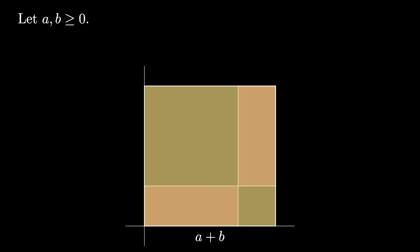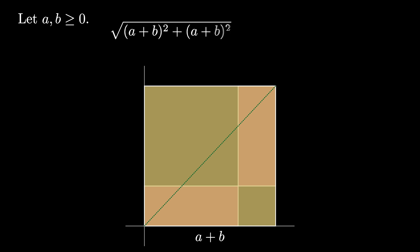The line connecting the origin to the upper right vertex of the square is the diagonal of the square, and thus has a length given by the square root of the quantity a plus b squared plus the quantity a plus b squared. But this length then simplifies to the square root of 2 times the quantity a plus b.